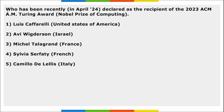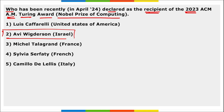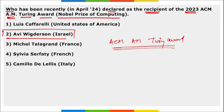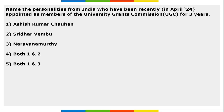Next: who has been recently declared as the recipient of the 2023 ACM A.M. Turing Award — the Nobel Prize of Computing? It is Avi Wigderson of Israel. He has been awarded the Nobel Prize of Computing — also known as the ACM A.M. Turing Award — for his contribution in the field of computation and mathematics. This award also carries a cash prize of 1 million dollars.